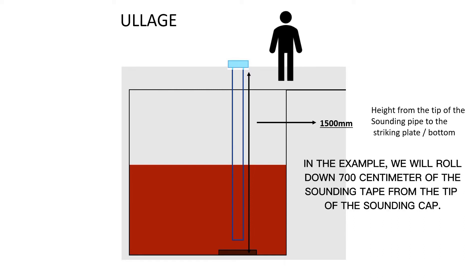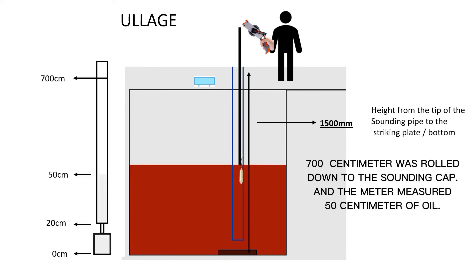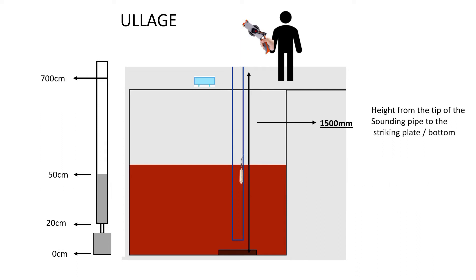In the example, we will roll down 700 cm of the sounding tape from the tip of the sounding cap. 700 cm was rolled down to the sounding cap, and the meter measured 50 cm of oil.